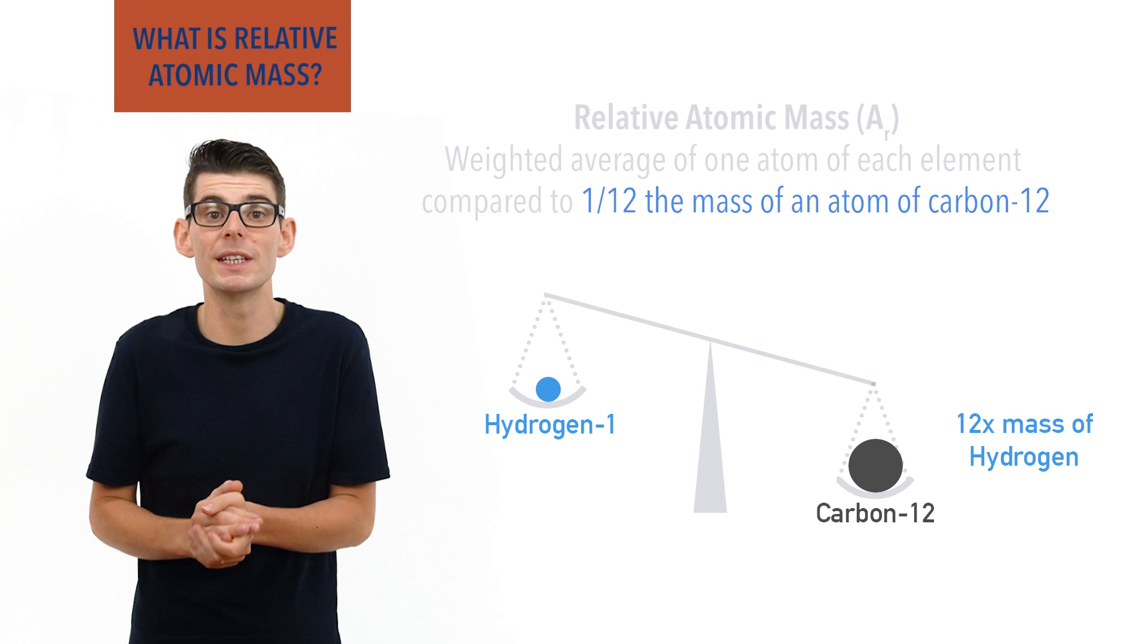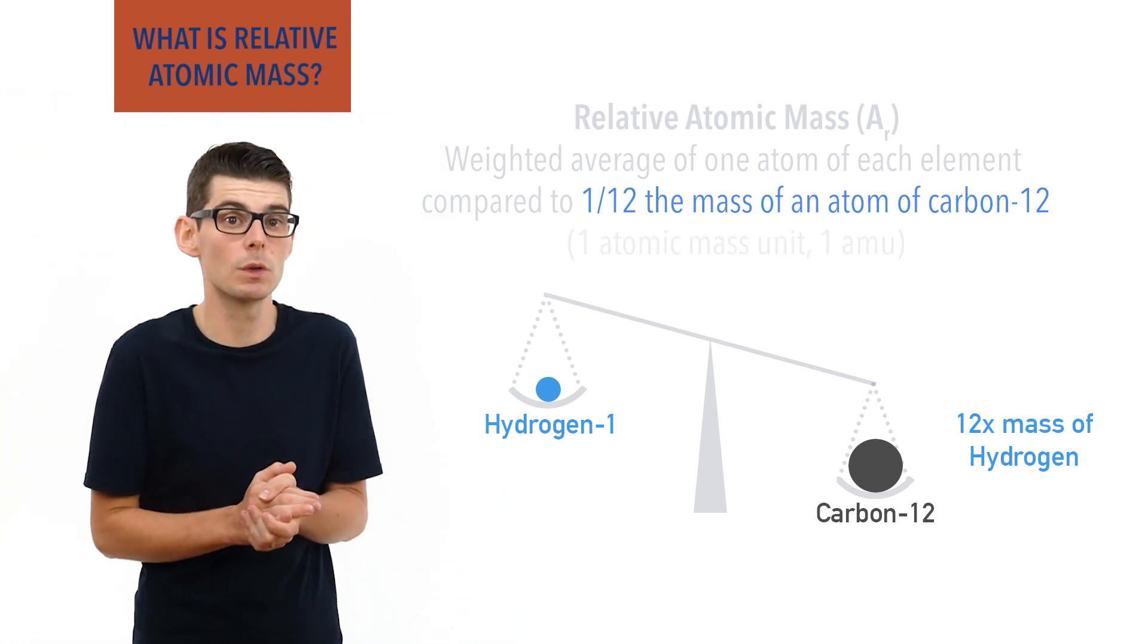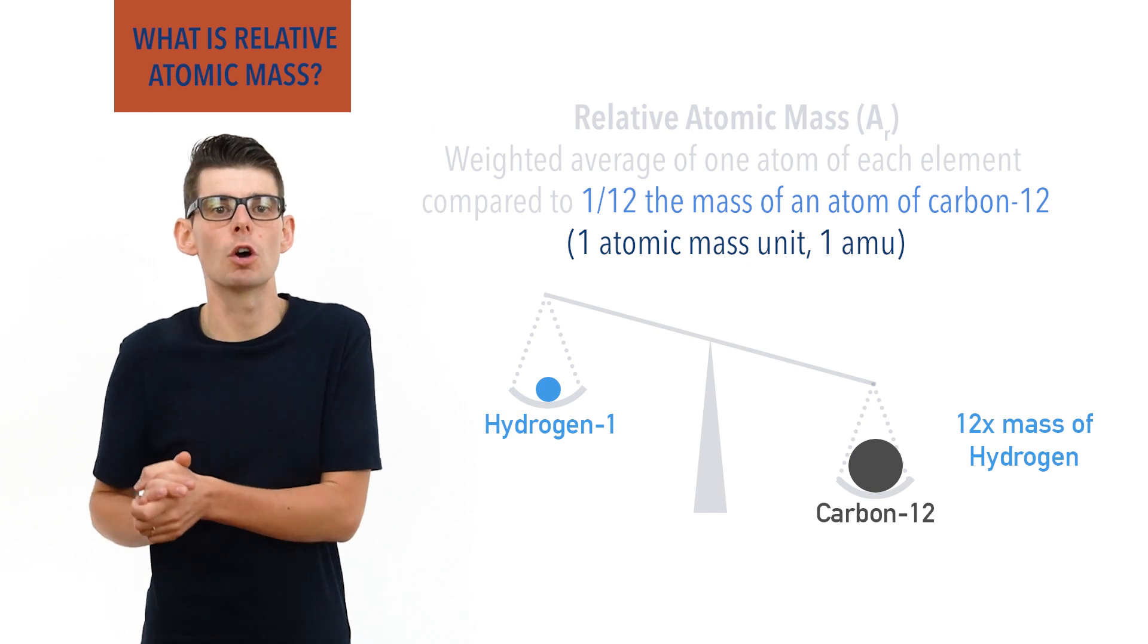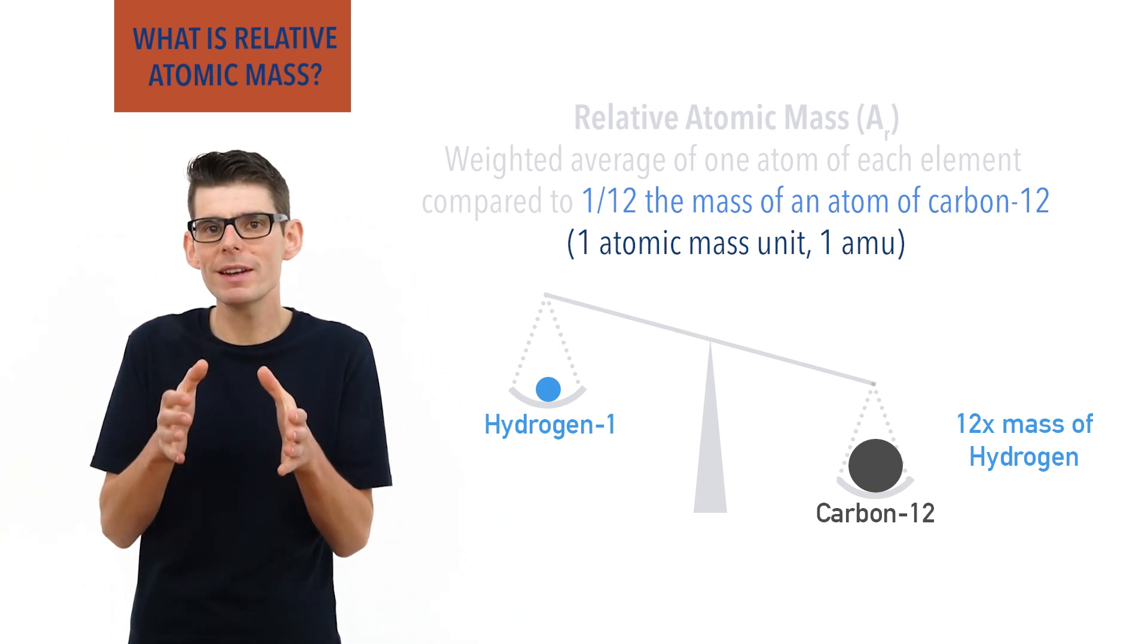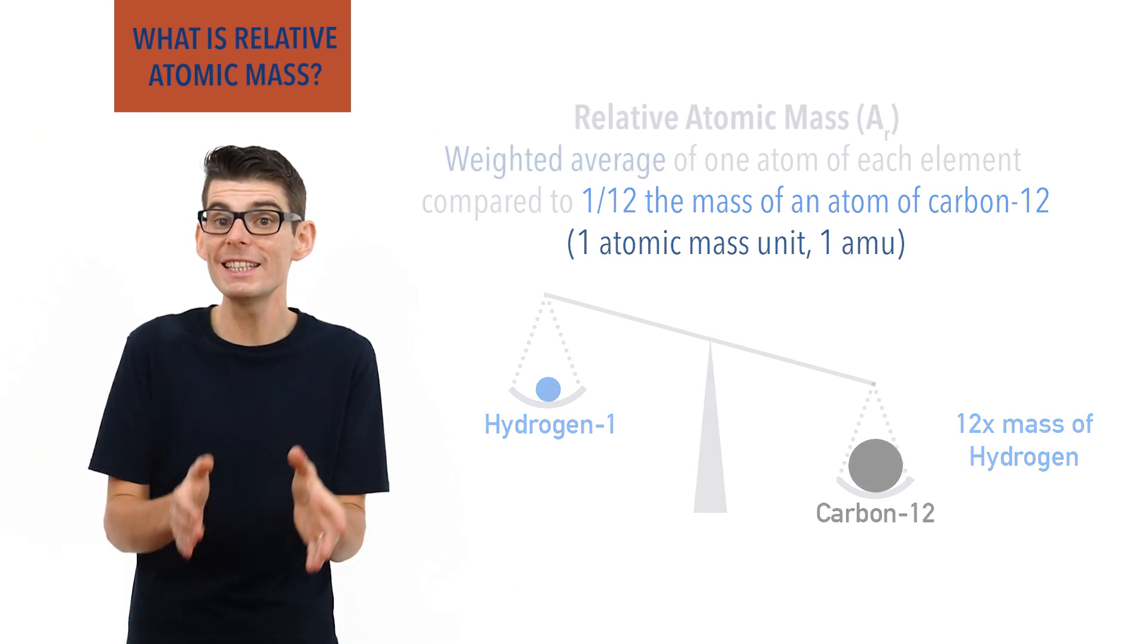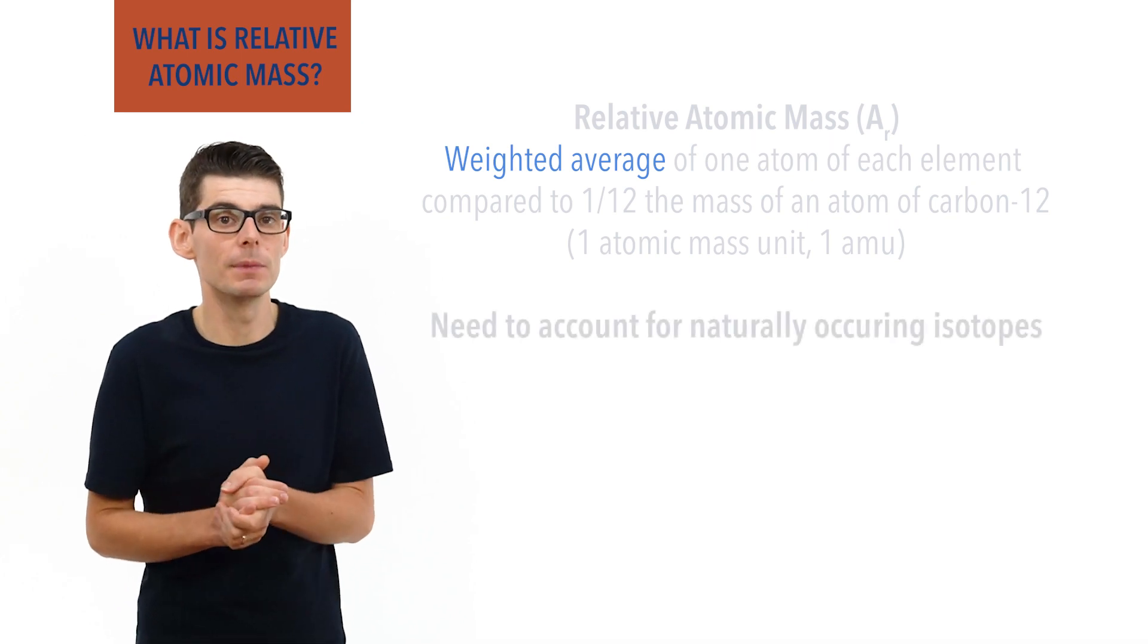This smallest possible unit is sometimes described as an atomic mass unit or one unified atomic mass unit. We describe relative atomic masses as weighted averages as we have to account for naturally occurring isotopes of elements.